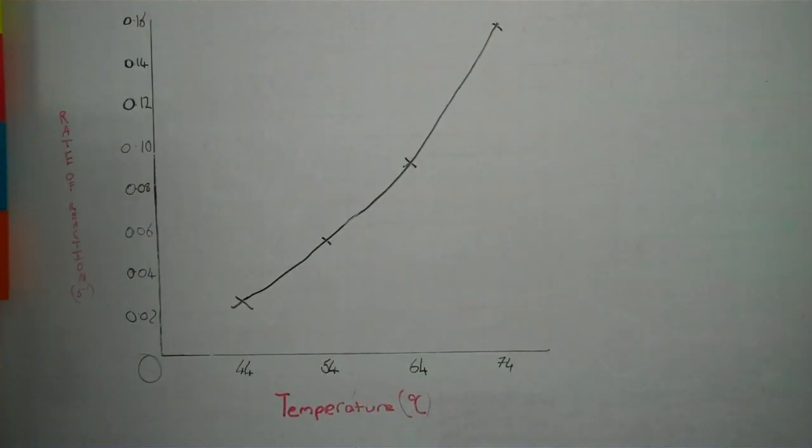Along the x-axis is the temperature in degrees Celsius. Along the y-axis is the rate of the reaction. The rate is 1 over T and the unit is s minus 1.